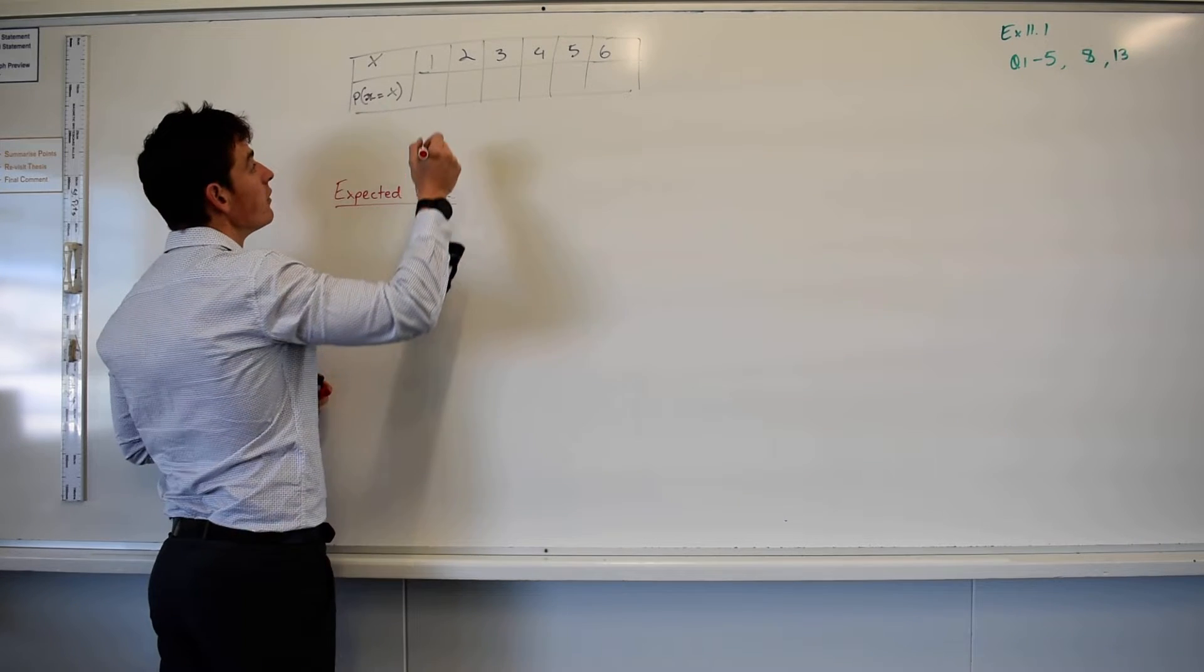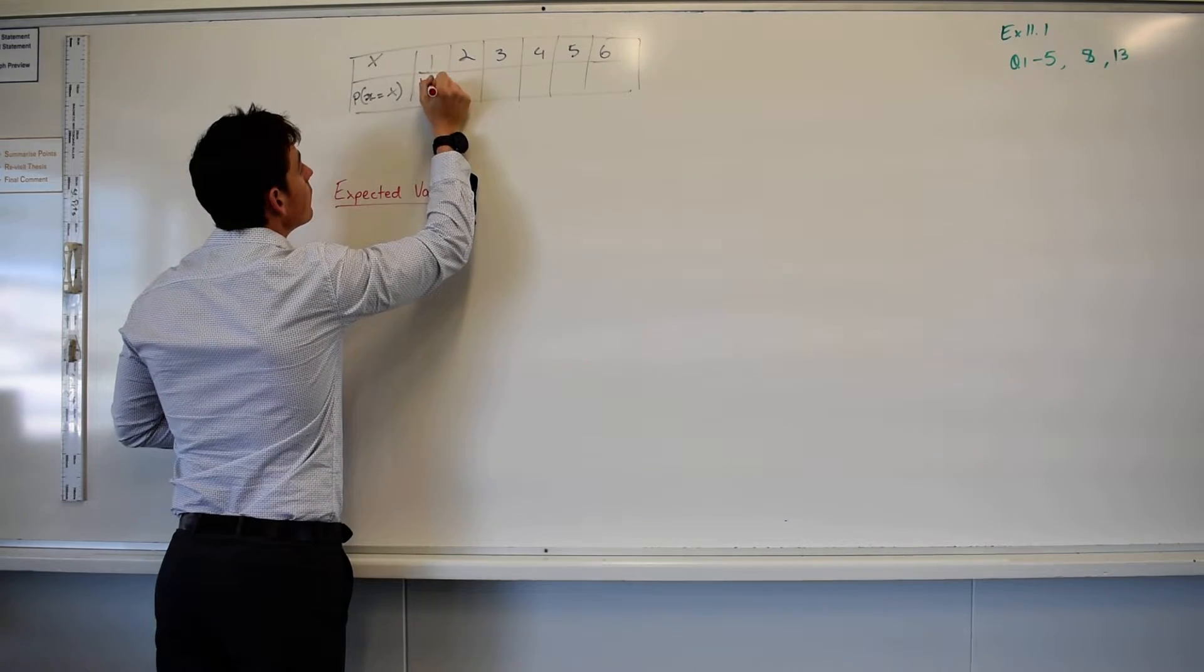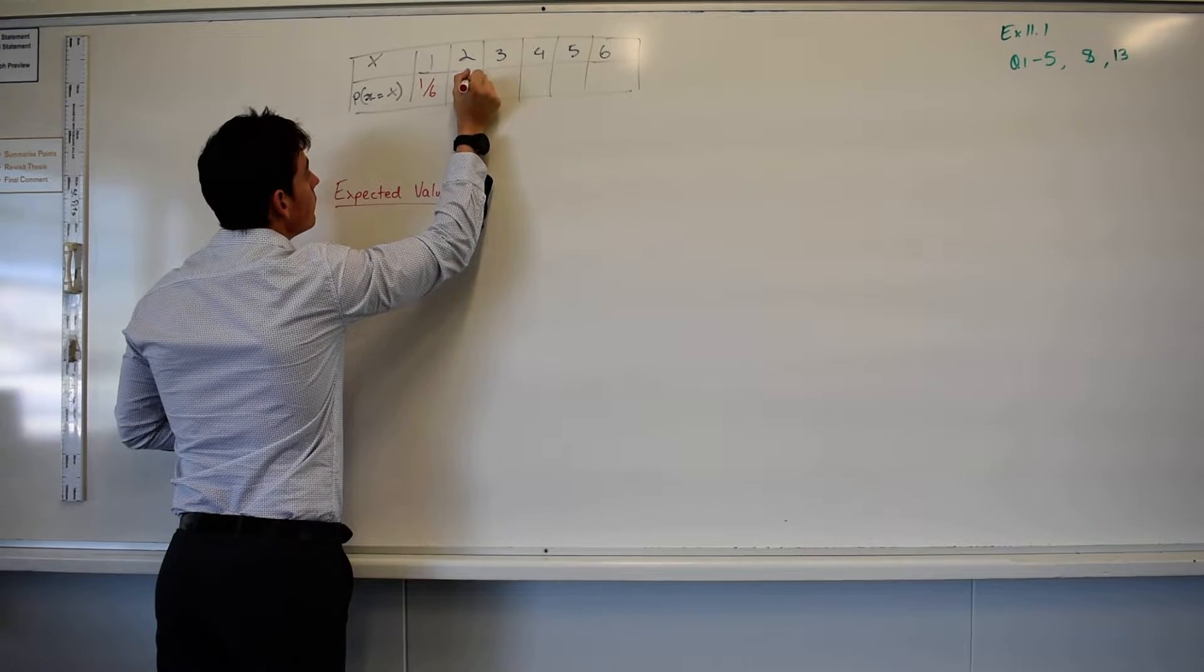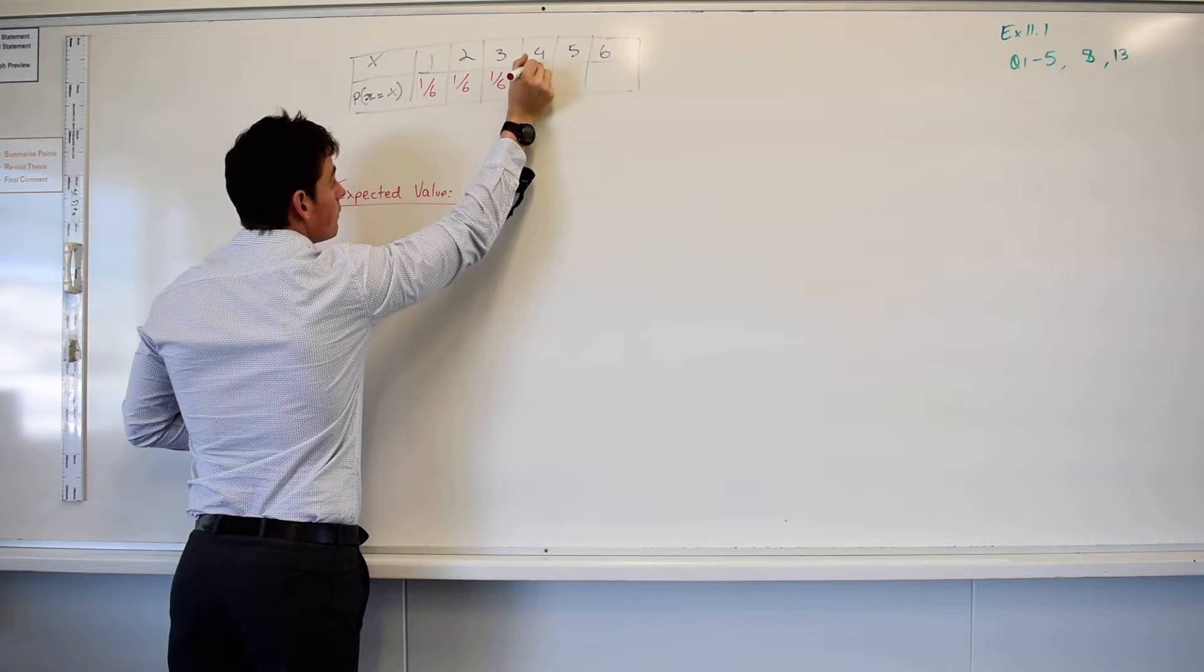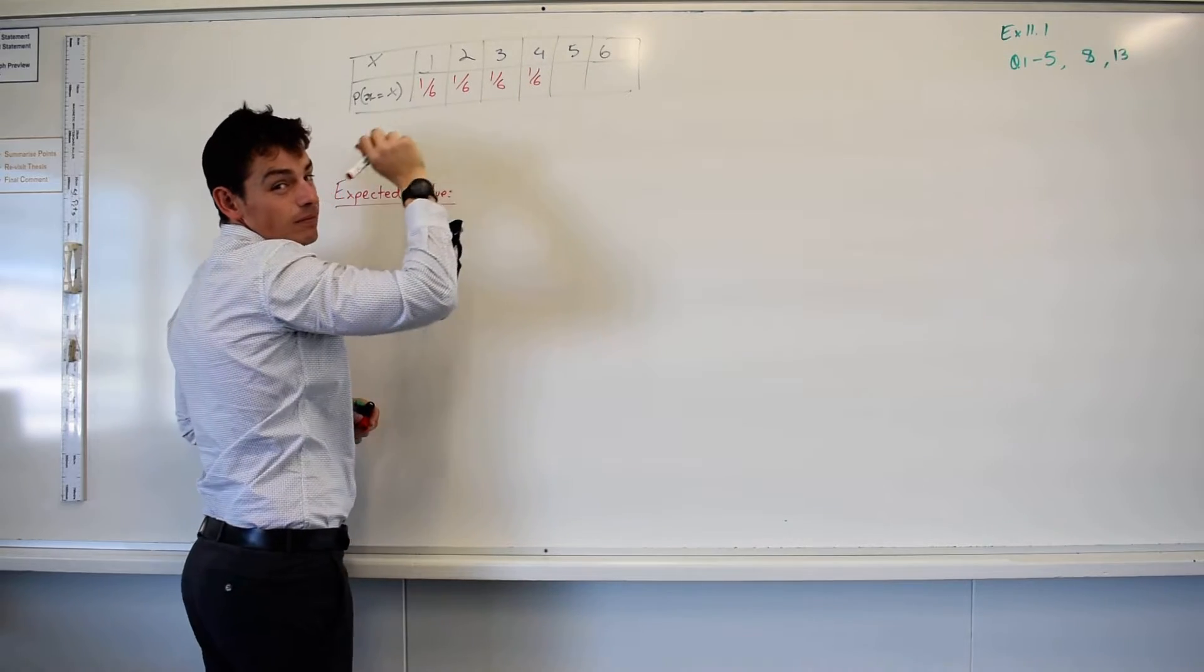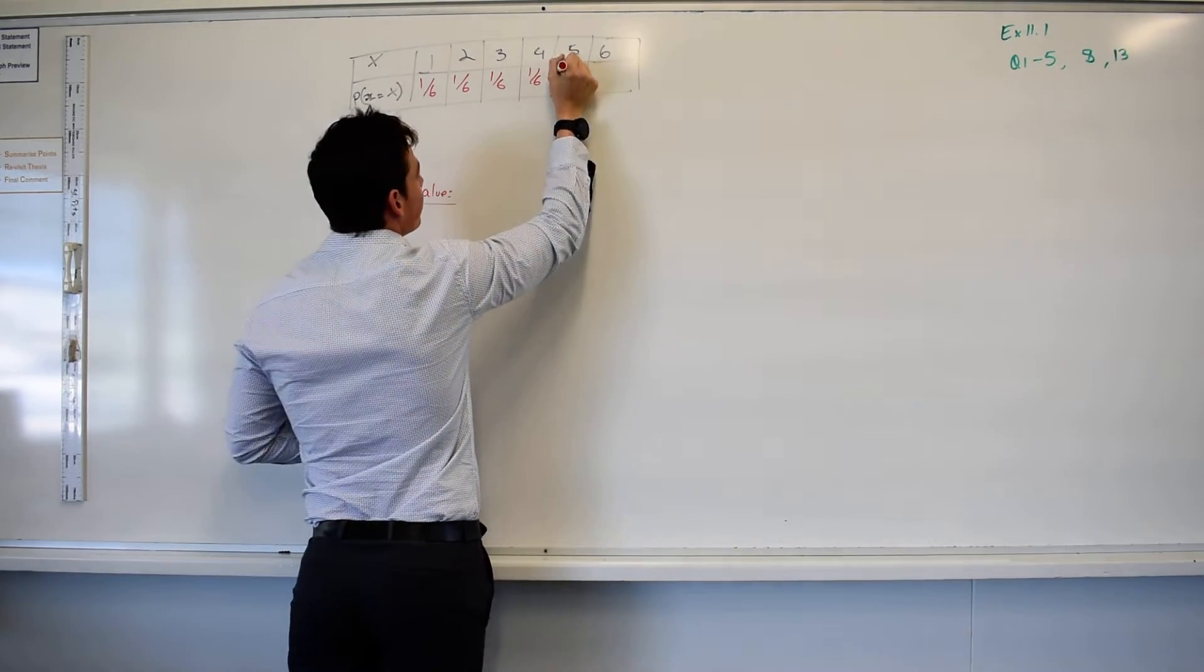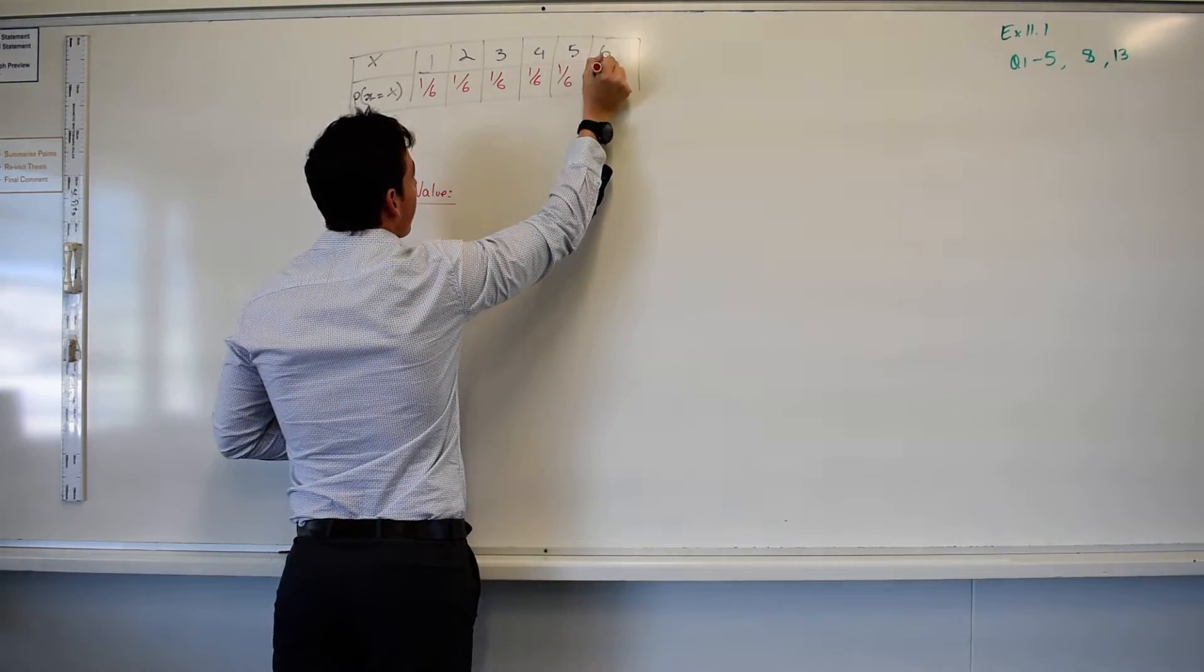So what's the probability of rolling a one? One sixth. Yep, two. One sixth. Three, Julian. One sixth. Four, Ethan. One sixth. Good, five. One sixth. Six. One sixth.